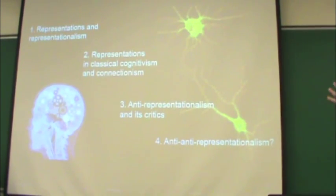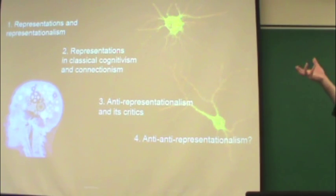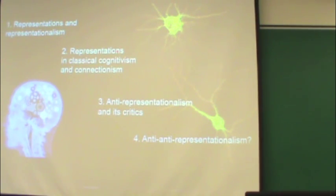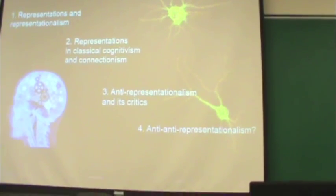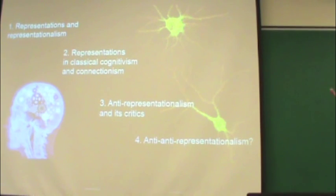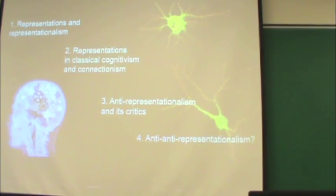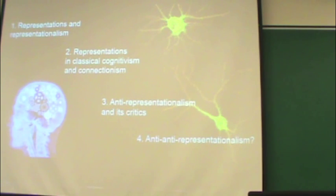Today what I'm going to try to do first is clarify those questions that Sam was asking earlier: what is a representation, and what do we mean by representationalism? I'm going to try to make it less abstract by fleshing it out in the two main research paradigms in cognitive science today — classical cognitivism and connectionism. Then I'm going to move to the meaty issue, which is anti-representationalism. As Sam said in the introduction, it's become very fashionable to believe that there is no such thing as representations, that this is a byproduct of our Cartesian way of thinking of the mind.